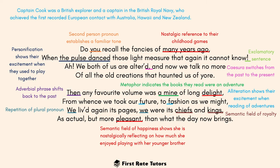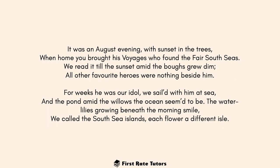The reference to 'delight' and 'pleasant' in this stanza belongs to the semantic field of happiness, which shows the speaker is nostalgically reflecting on how she loved playing with her younger brother. Then there's another adverbial phrase of time — 'now brings' — shifting to the mundane present tense where they're adults. It's no longer fun; they're not having all of this imagination, and maybe they're not even spending much time together as siblings anymore because they're leading their own lives.